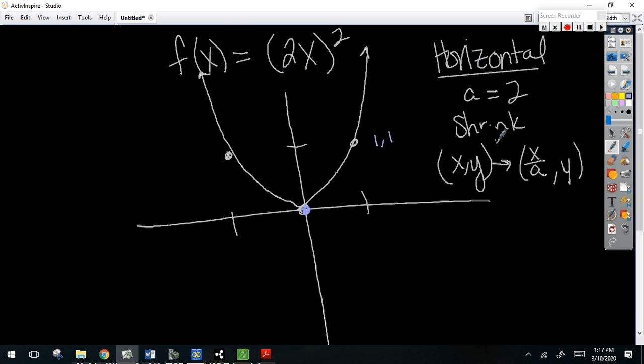What does the point 1, 1 become? Take X and divide it by A, so it becomes, so 1, 1 would become 1 half 1, right? 1 half 1.